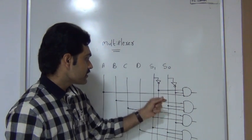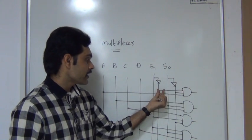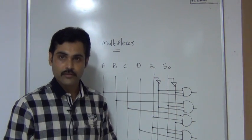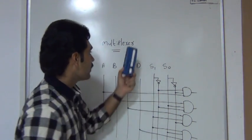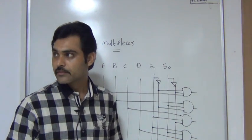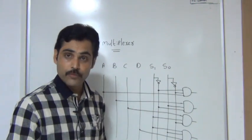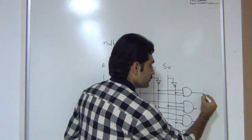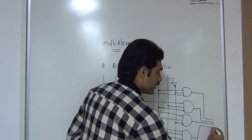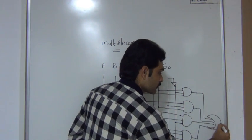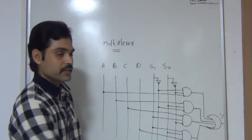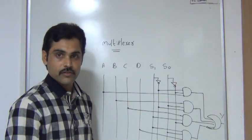Every time the selection lines are changing, and as per the block diagram the multiplexer output is a single output. But here we are getting four outputs from the AND gates. So all these outputs I will connect to an OR gate. This is my final output. In this way I will construct the multiplexer logic diagram.